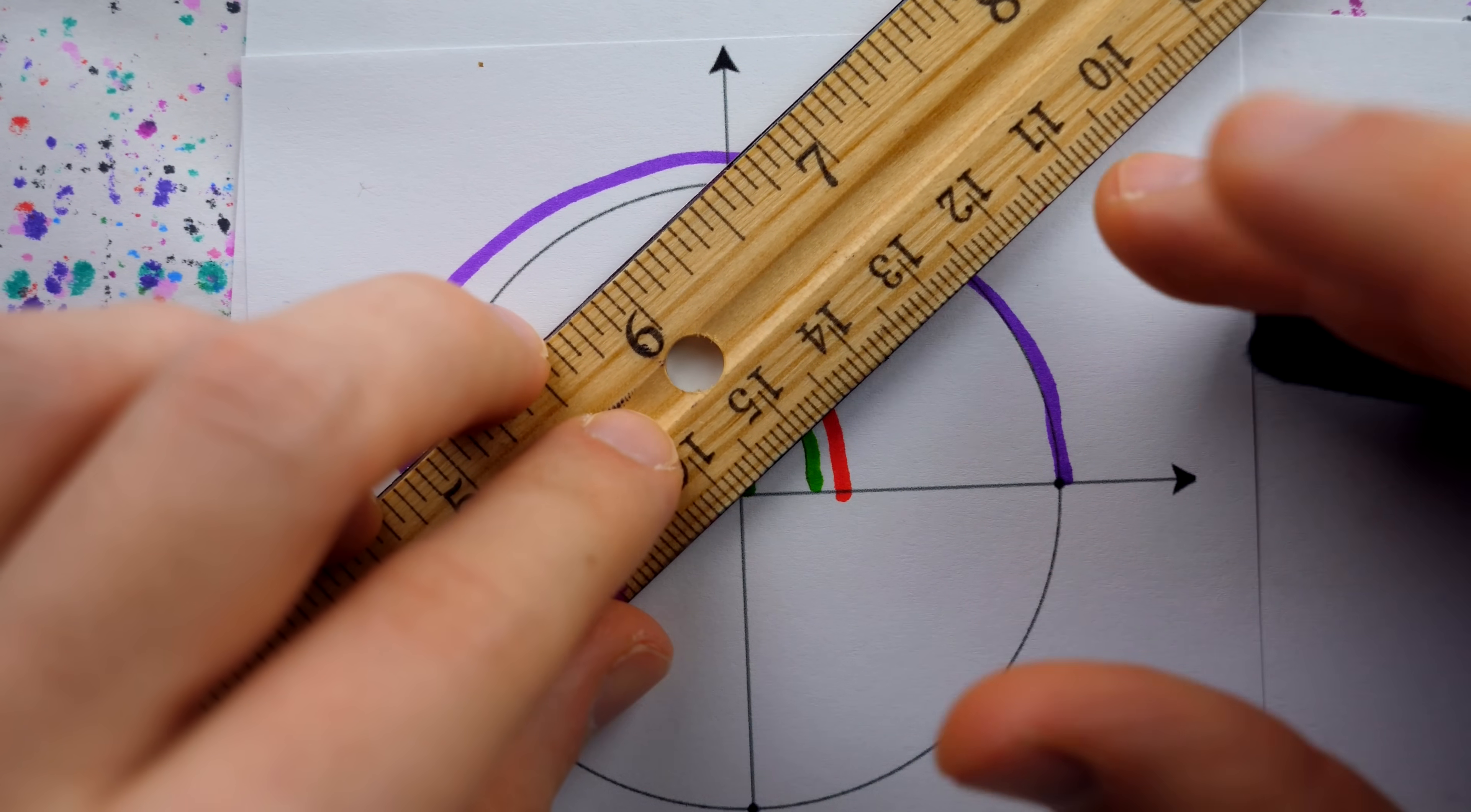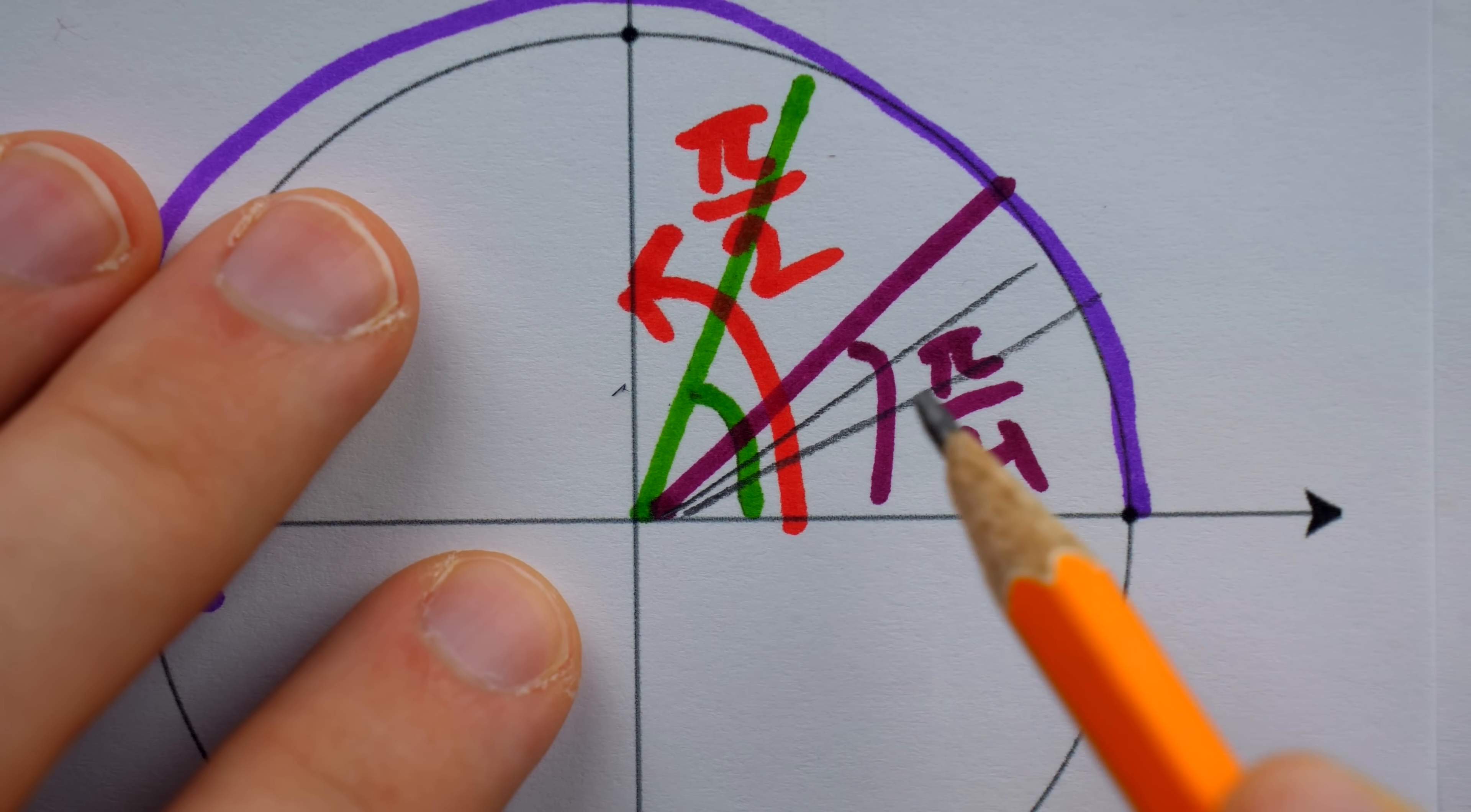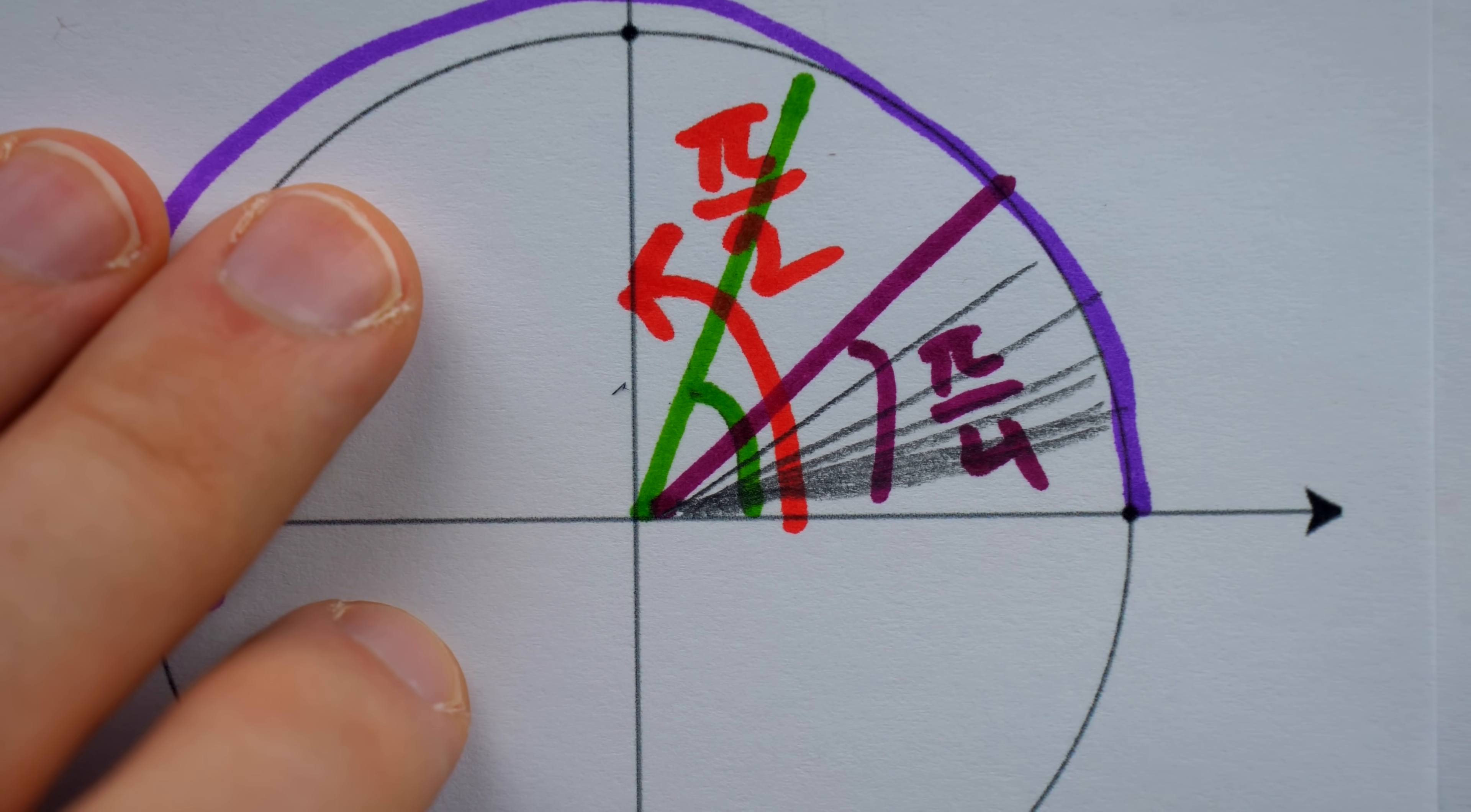If we continue to divide pi by increasing positive numbers, the angles look like this, continuing to live in the first quadrant and approaching the x-axis.